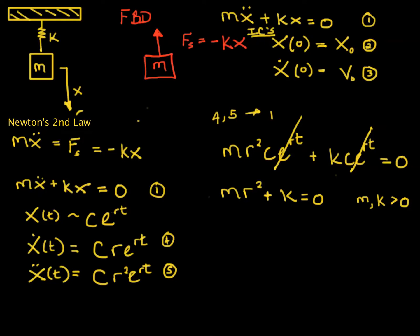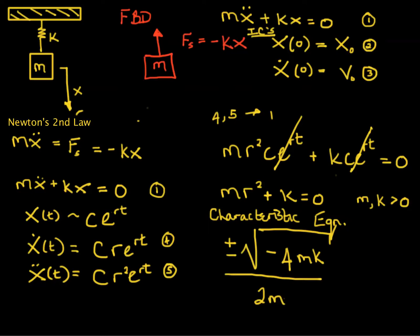This is known as the characteristic equation. And the answer to this is really just from high school. The answer to a second order polynomial, the roots of a second order polynomial. So this is equal to plus or minus the square root of minus four times m times k all over 2m.